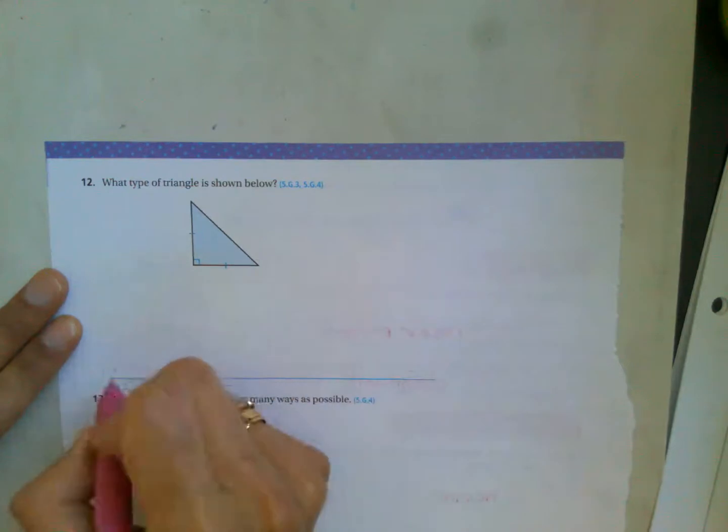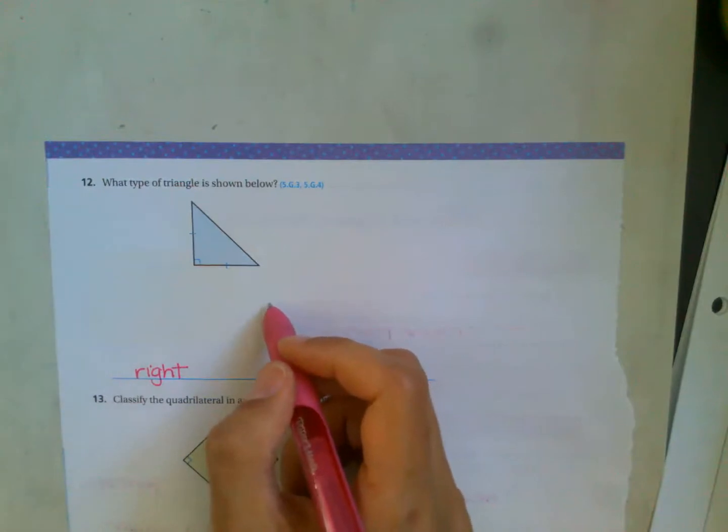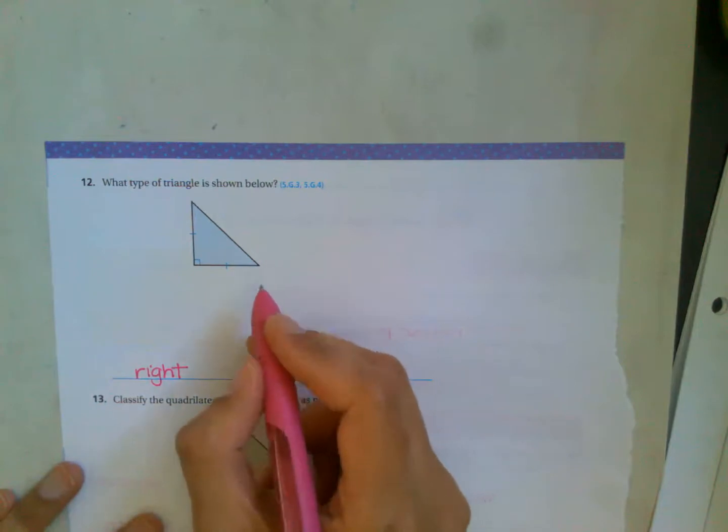Number 12. What type of triangle do you see? Well, this is right. It's a right angle and it has two congruent sides or one pair of congruent sides or two sides that are equal, which are shown by the tick line. So that's isosceles.